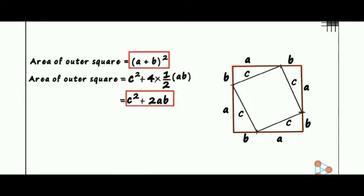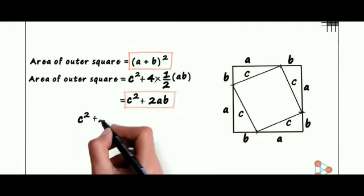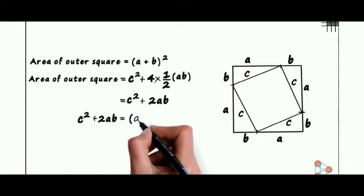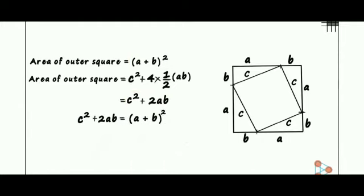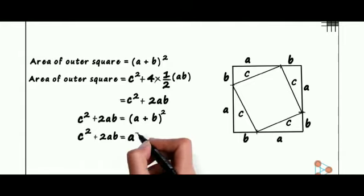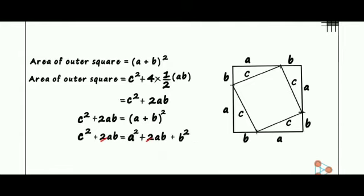Both these are the area of the outer square. Equating these two, we can write C² + 2AB = (A + B)². And using the identity for (A + B)², we write this as C² + 2AB = A² + 2AB + B². And cancelling out 2AB from both the sides, we get C² = A² + B². This is the Pythagoras theorem.